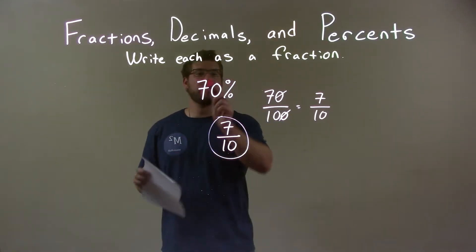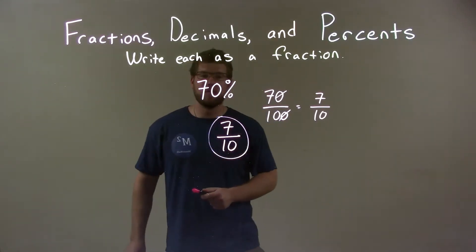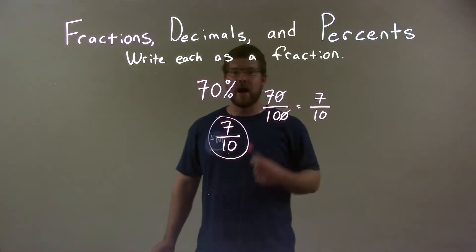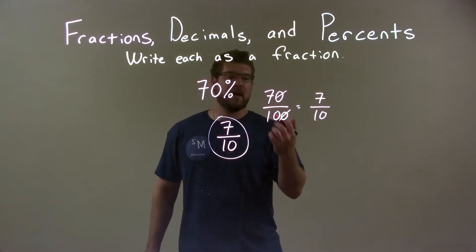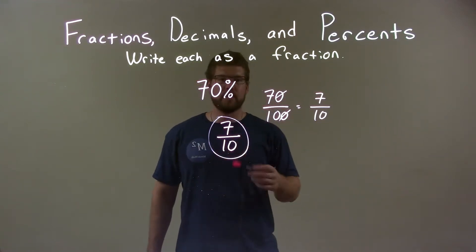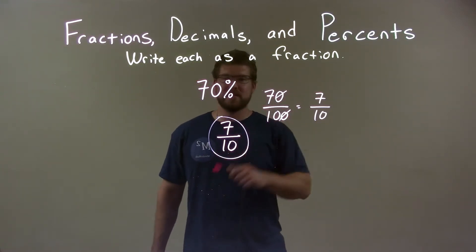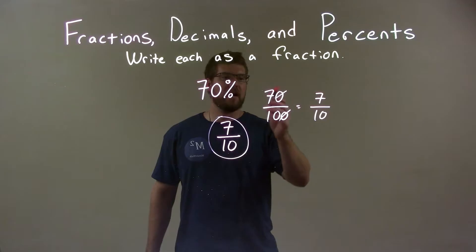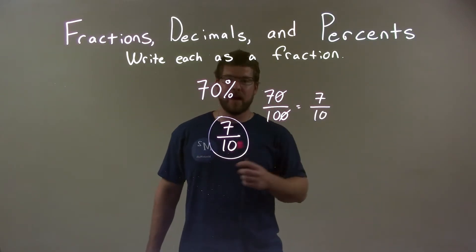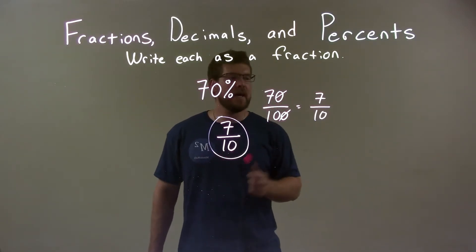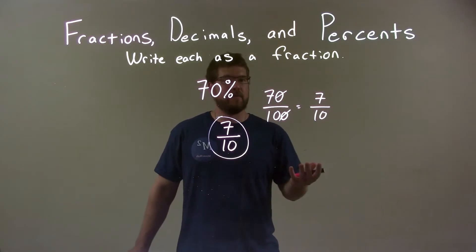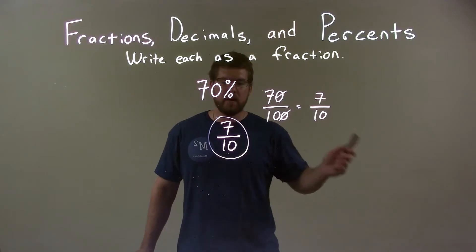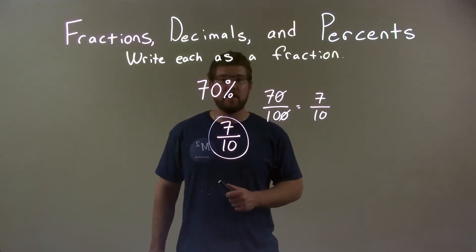Quick recap: we're given 70% and we have to write that as a fraction. 70% is the same thing as 70 out of 100. And then we simplified that — divided both the numerator and the denominator by 10 — giving us 7 tenths. We can't simplify it anymore, so our final answer is 7 over 10.